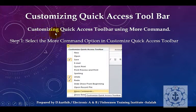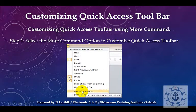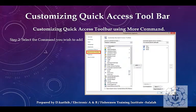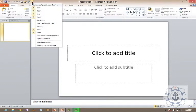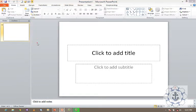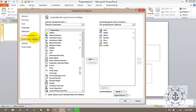The second method is customizing the Quick Access Toolbar using 'More Commands.' Apart from the menu options, there is one more option called 'More Commands.' We can use More Commands to customize the Quick Access Toolbar. Click the Customize Quick Access Toolbar button, go to the option 'More Commands,' and click it. Here you can see the Quick Access Toolbar dialog.